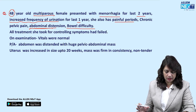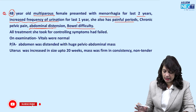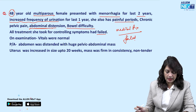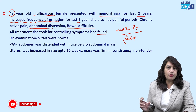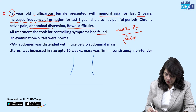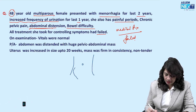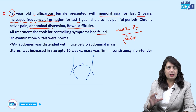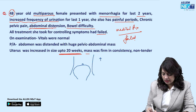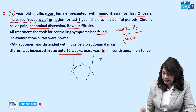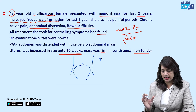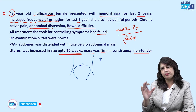The obstetric history was not given in this clinical case. All treatment taken for controlling symptoms has failed — meaning medical treatment has been tried and has failed. On examination, the vitals were normal. Per-abdomen examination revealed a distended abdomen with a huge pelvi-abdominal mass. The uterus was enlarged to the size of a 20-weeks pregnant uterus. This mass was firm in consistency and non-tender.